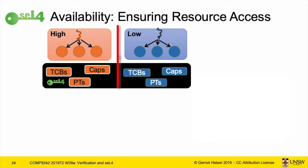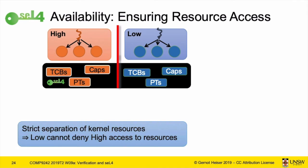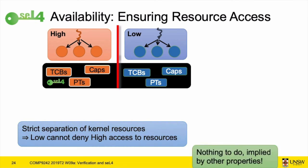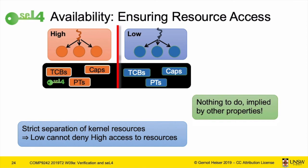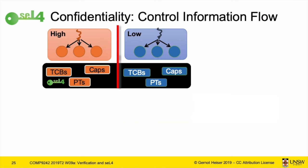Availability turns out to be trivial in seL4, again coming down to the memory management model. With complete resource isolation even for kernel data, availability falls out for free — there's nothing left to prove. If we have this partitioned system, there's no way a low domain can in any way stop a high domain from accessing the resources it's been promised. That's what availability means — a no-op.